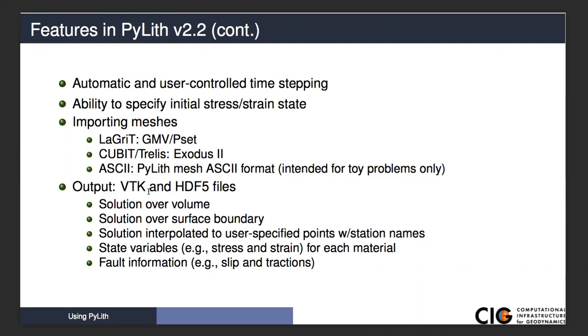The state variables—we can also output for every single material the stress strain. For the viscoelastic models, it can be the viscous stresses. The fault information includes things like slip, slip rate, tractions, as well as any of the state variables for a friction model. We won't spend too much time covering state variables in our examples, but we'll cover most of these others quite extensively.